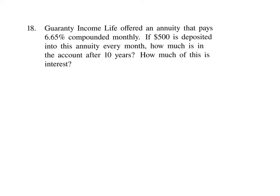It says Guarantee Income Life offered an annuity that pays 6.65% compounded monthly. You have $500 deposited into this annuity every month, so we're making payments. The payment is equal to $500.